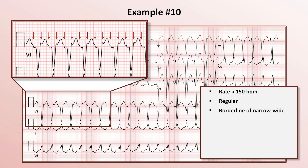But with experience, you'll realize that those bumps superimposed on the beginning of the ST segment are the exact same ones superimposed on the end of the T-wave. Thus, there is regular atrial activity occurring at a rate of about 300 beats per minute.